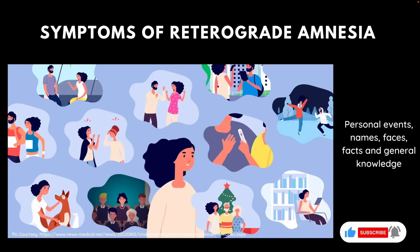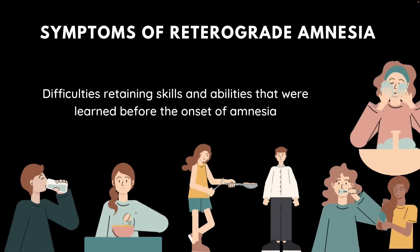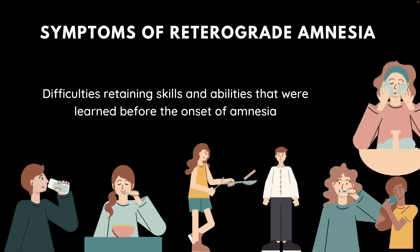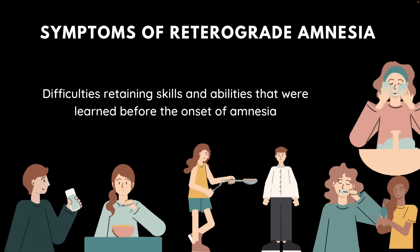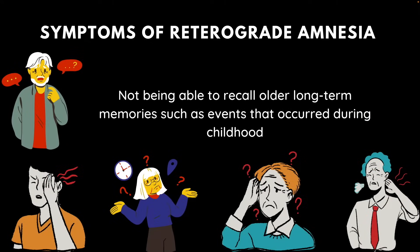The symptoms of retrograde amnesia can vary depending on the nature and severity of the injury. Common signs include not being able to remember personal events, names, faces, places, dates, and other facts that were learned before the onset of this form of amnesia. Additionally, one may forget facts and information pertaining to general knowledge learned before the onset of this amnesia. One may also have difficulties retaining skills and abilities learned before the onset of retrograde amnesia. Finally, not being able to recall older long-term memories, such as events from one's childhood, is a common symptom observed in this form of amnesia.